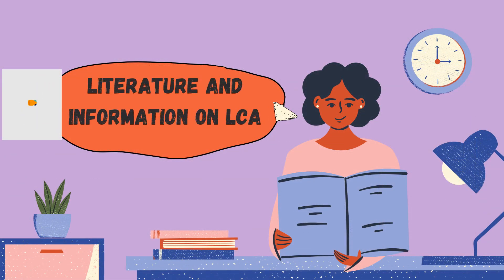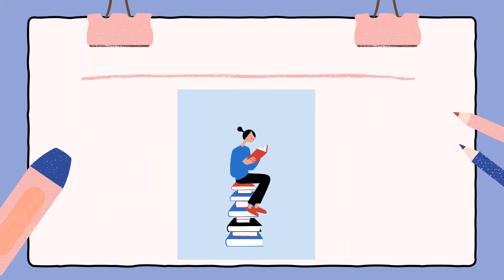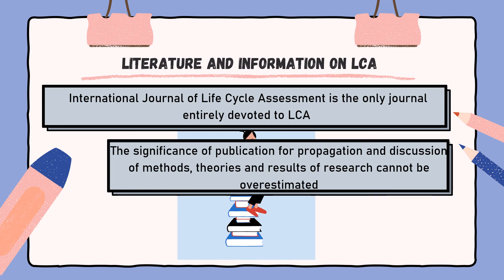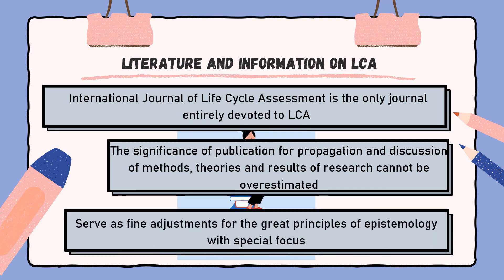Third, we will discuss literature and information on LCA. Since 1996, the International Journal of Life Cycle Assessment has been published by eco-comm publishers Landsberg, Lech and Heidelberg, and since the beginning of 2008 by Springer, Heidelberg. Current information can be found at http://www.springer.com/environment/journal/11367. The significance of this publication for propagation and discussion of methods, theories and results of research cannot be overestimated. Especially within new branches of science, peer reviews judge scientific validity on a day-to-day basis. They serve as adjustments for the great principles of epistemology, with special focus according to Popper on foreseeability, which cannot be examined unambiguously for LCA. The scientific character of LCA is discussed critically in the following chapters dealing with the phases of LCA.